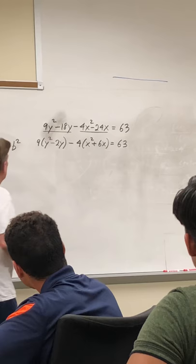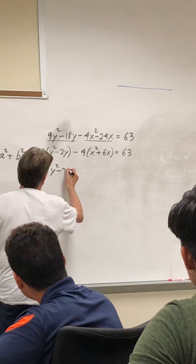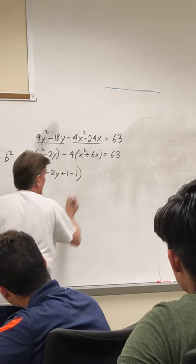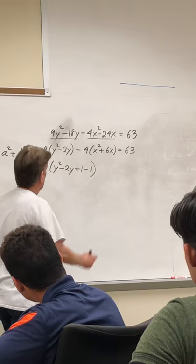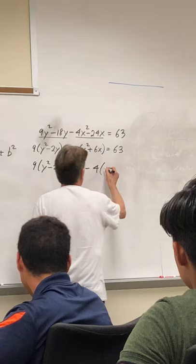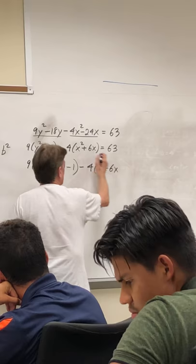Okay, so now we complete the square. So on this one, I add a 1 and subtract 1. Half of 2 is 1, 1 squared is 1. And on this one, what do I add? Add a 9. Half of 6 is 3, and 3 squared is 9.